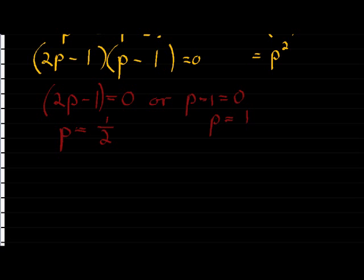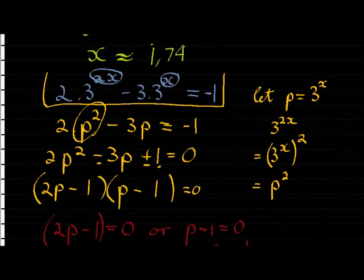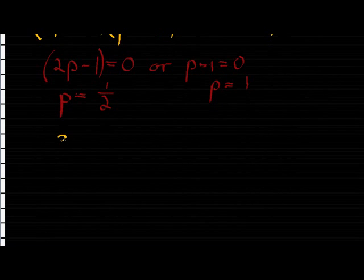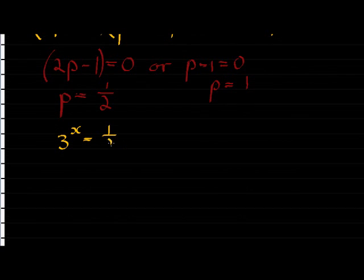So let's go substitute back. Remember, we actually substituted p. It used to be 3^x. So now, 3^x is equal to a half or 3^x is equal to 1. This one is very easy to solve. What exponent can I give 3 to get 1? 0. So x might be 0. That one will work.